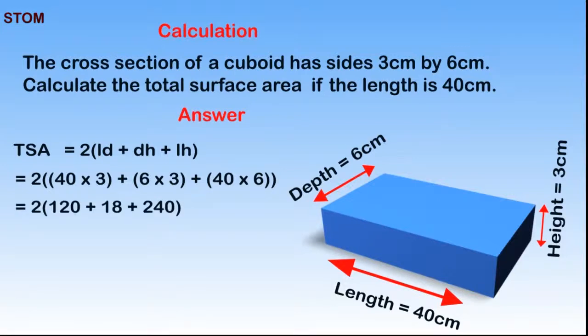When simplified further, multiplying 40cm by 3cm we get 120cm, multiplying 6cm by 3cm we get 18cm, and multiplying 40cm by 6cm we get 240cm.